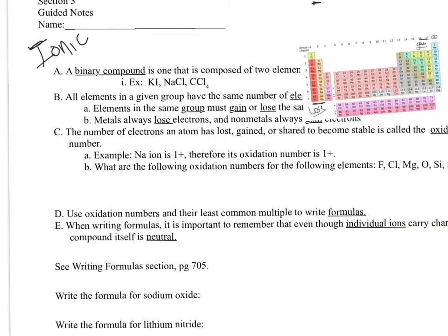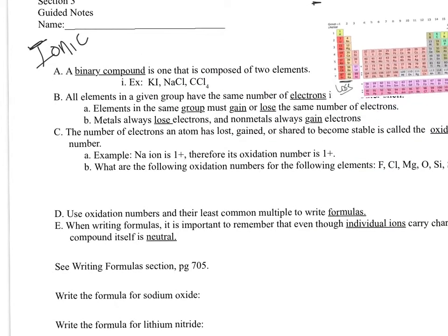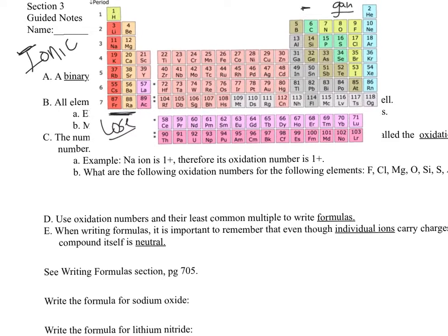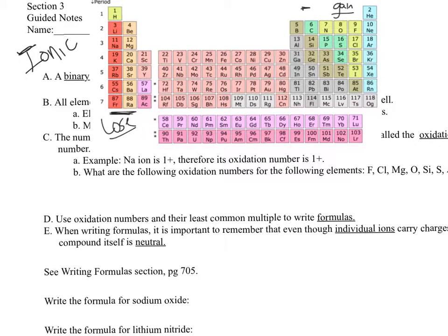The number of electrons an atom has to gain or lose is called the oxidation number. The oxidation number is what the charge will be once it has a full outer shell. Fluorine is one space away from the nearest noble gas, so it needs to gain just one electron to be like neon and have a full outer shell. It's going to have a negative oxidation number — negative one — because it gains a negative charge.